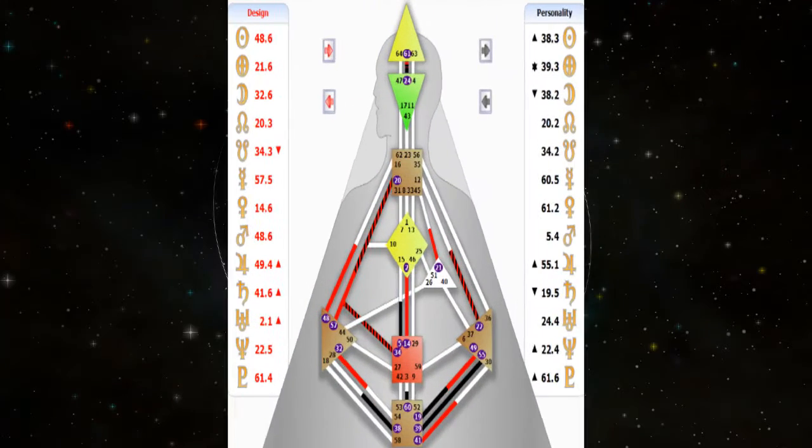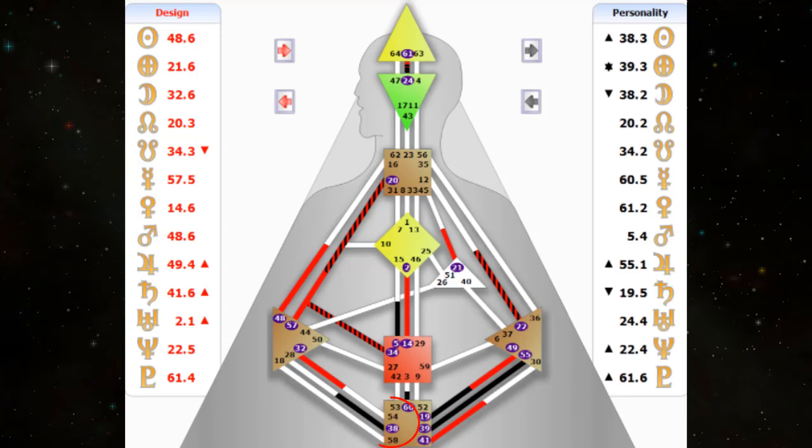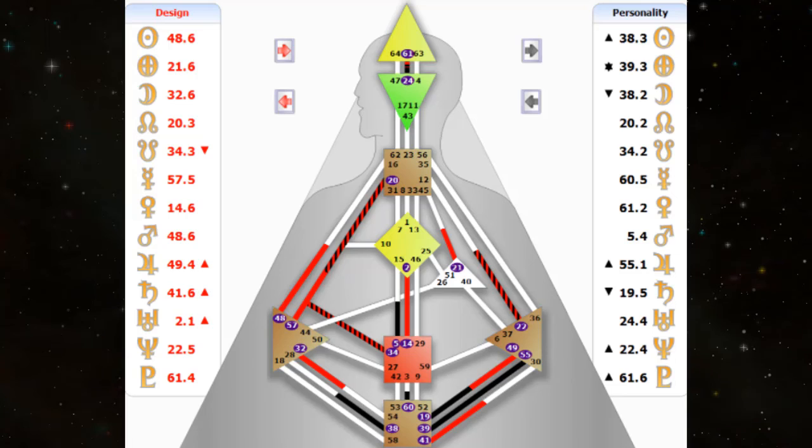In terms of human design, the moon is going to reside at gate 38, the gate of resistance, struggle, opposition, and stubbornness. This is the gate of the warrior. There is pressure here to fight, to insist on some cause.